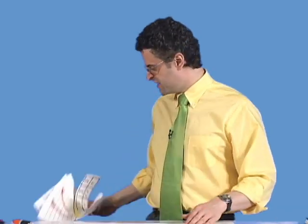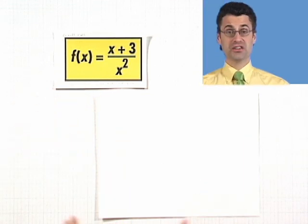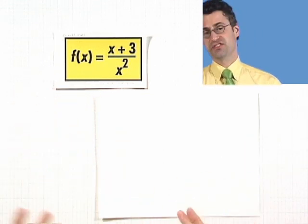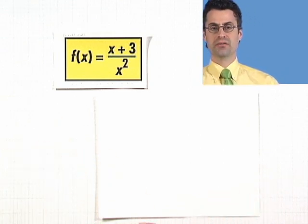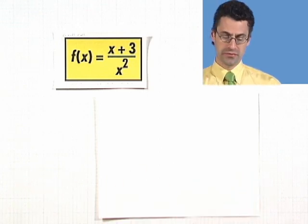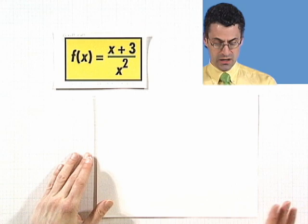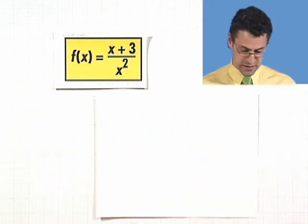Let's take a look at another one because these are kind of like raisins — you can't just do one. Here's one. We can use a graphing calculator to graph these functions just like any function. Rational functions are just a special case of functions. Let's analyze this a little bit and then see what the graphing calculator produces.